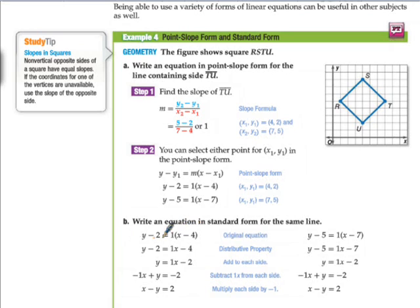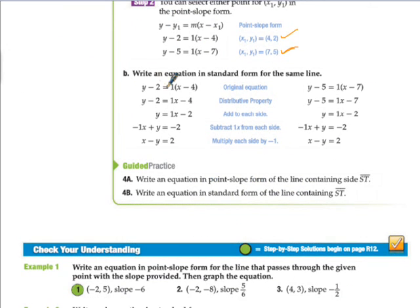What I like about the example down here is they show you that both of these would be correct. If you use point (4, 2), this is what it looks like. If you use point (7, 5), this is what it looks like. They both had a slope of 1. What I like is that if we move from point-slope form to standard form, you'll see that even though we started with different numbers, we get the same equation.